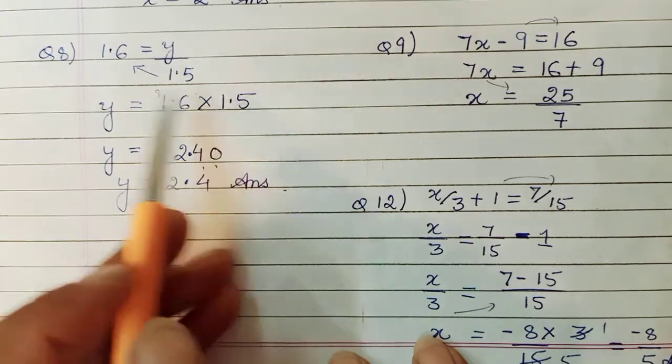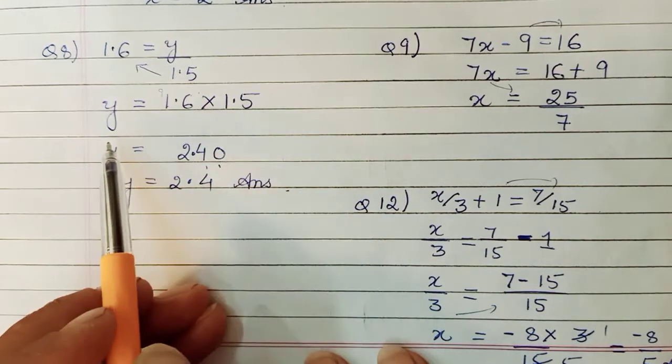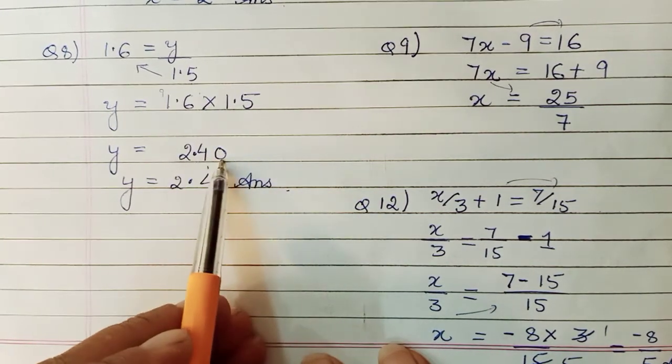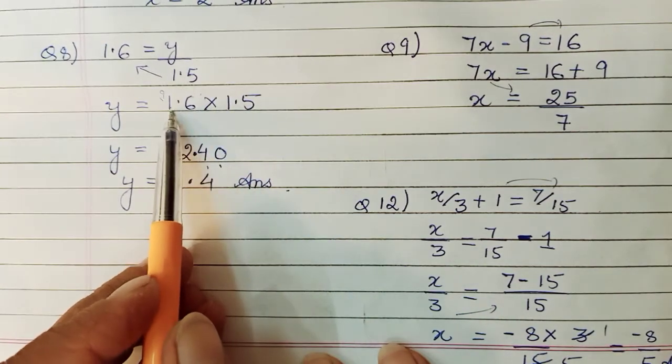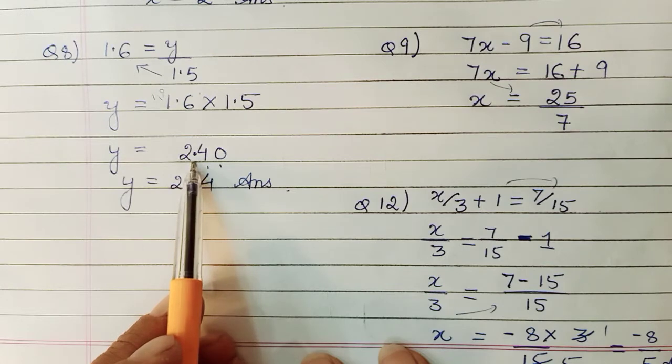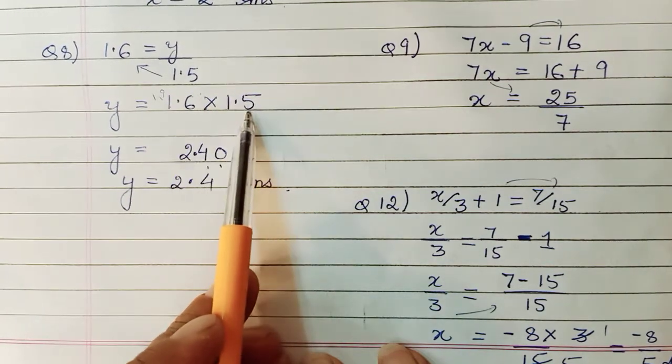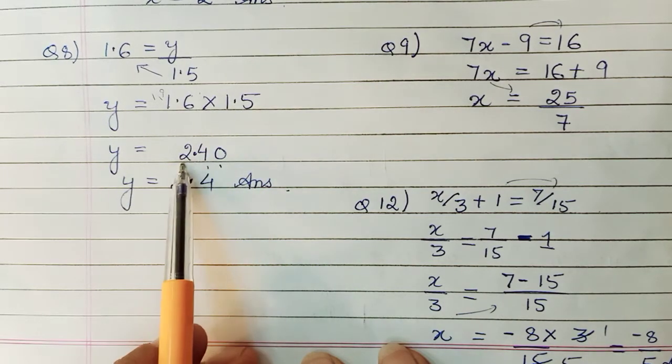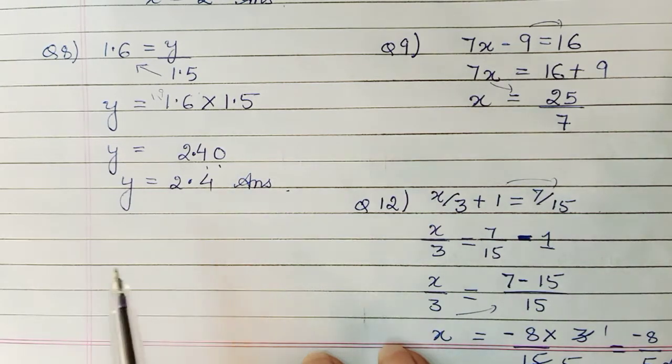Now if you know your tables well you can do it in one go. 15, forget about the decimals. Don't panic. Treat them as 16 into 15. Then we will add the decimal. So 15, 6s are 90, 0, 9 will be carried over. Then comes 15, 1s are 15 plus 9 makes it 24. So 240. Now total in this there were 1 plus 1, 2 decimal places. So you'll have 2 decimal places in the answer as well. So this would become 2.4 now. So y equals 2.4 is your answer.